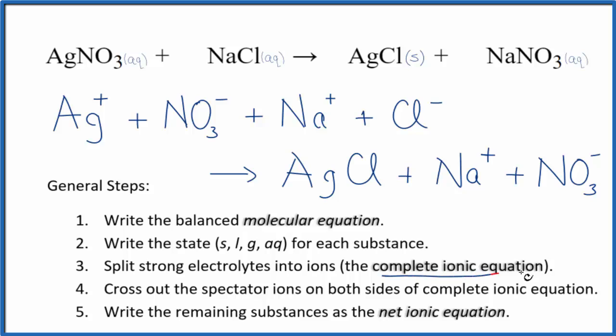Once we have this complete ionic equation, we can now get the net ionic equation. And we do that by crossing out the spectator ions. They're on both sides of the complete ionic equation.